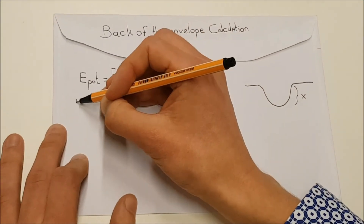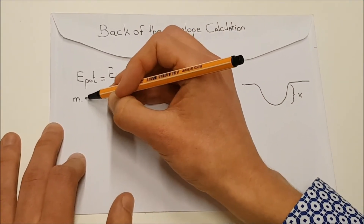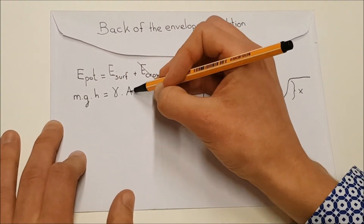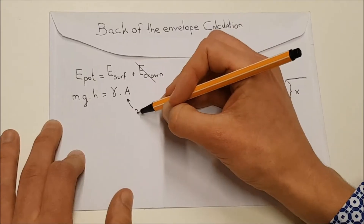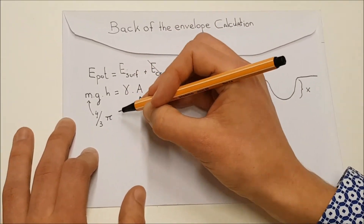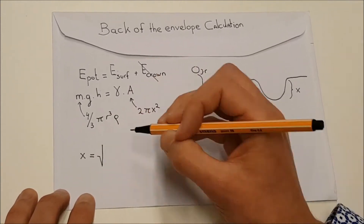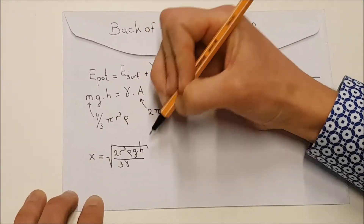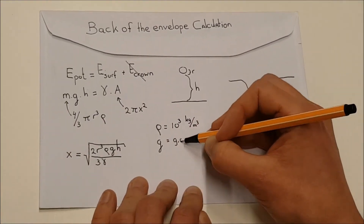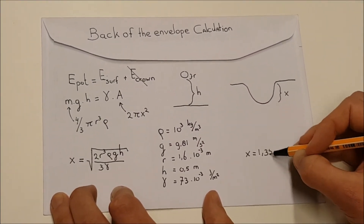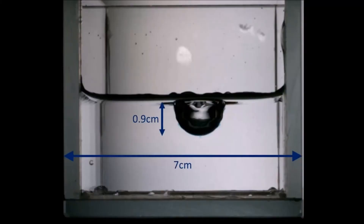Take the potential energy as the mass of a sphere multiplied by gravity and the height. This equals the surface tension energy, which is the surface tension times the area of the crater. We approximate the crater as half a sphere. From these, we can derive an expression for the height of the crater. Filling in all the values applicable to the water droplet, we get a height of the crater of 1.35 cm, which is slightly larger than the observed value, as we expected.